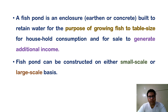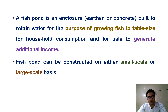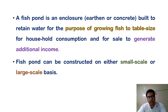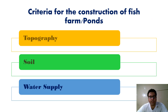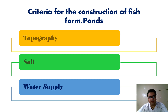A fish pond is an enclosure, whether earthen or concrete, built to retain water for the purpose of growing fish to table size, for household consumption, or to generate additional income. Fish ponds can be constructed on either a small scale or large scale basis. Success in fish farming and economy of construction would depend largely on the selection of a suitable site for the fish farm.